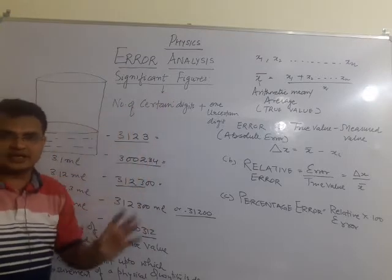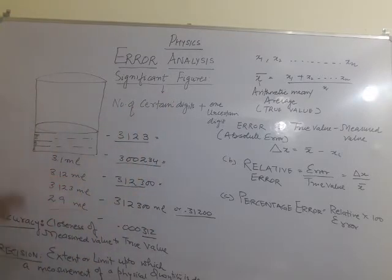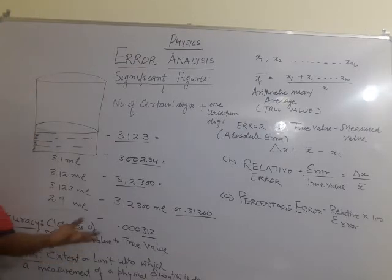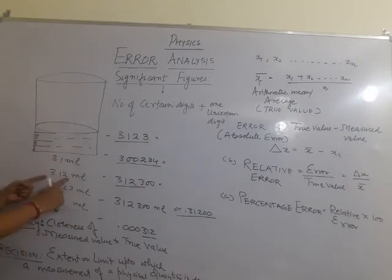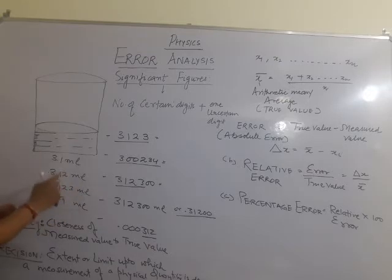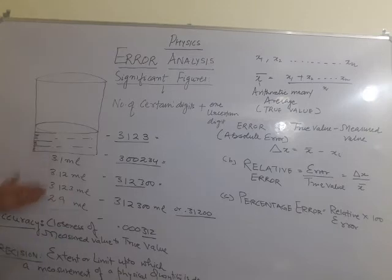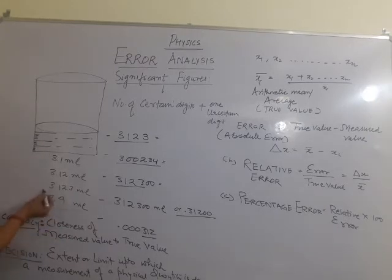Let me tell you a few examples. This is a measuring beaker which contains a liquid. We have 4 or 5 readings: the first reading is 3.1 milliliter, the second is 3.12 milliliter, the third is 3.123 milliliter, and another is 2.9 milliliter. In all measurements, you can see the most accurate measurement is 3.123.